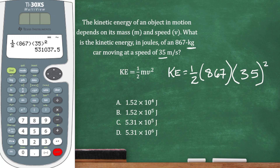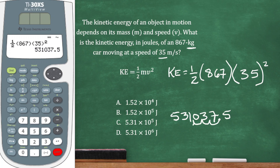And here's our answer — let's go ahead and write that down: 531,037.5. None of our answers look exactly like that because they're in scientific notation. Let's convert by moving the decimal place to the left. In scientific notation, you can only have one number before the decimal point. Moving five places gives us 5.31, and since we moved the decimal to the left five places, we multiply by 10 to the fifth. So our answer is C.